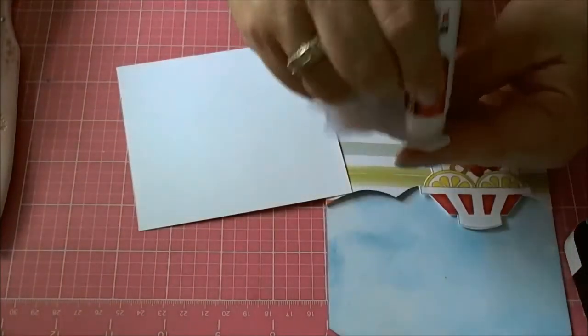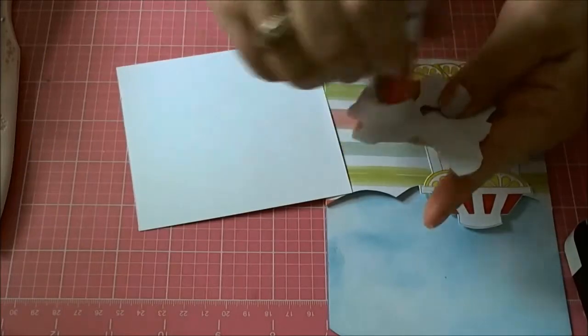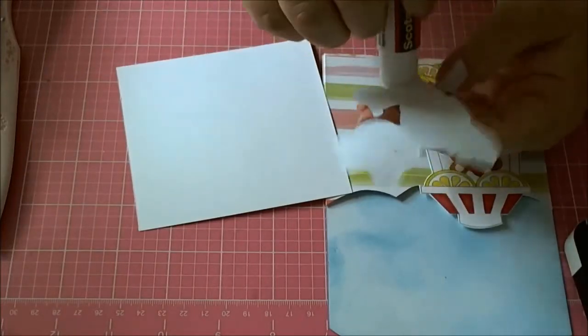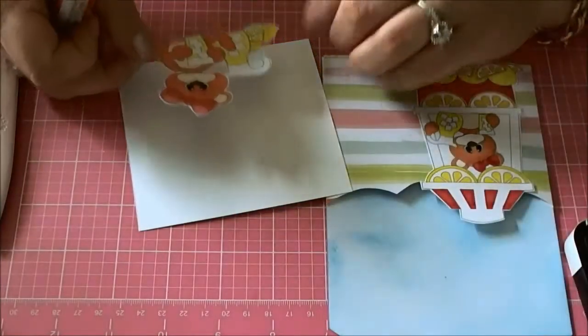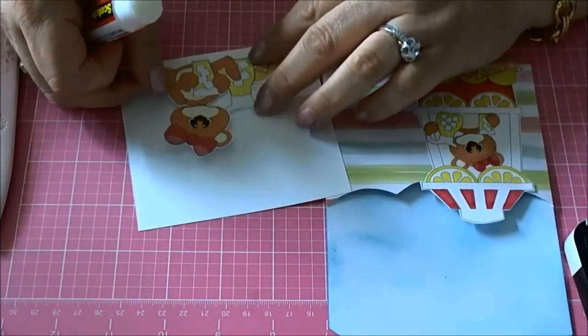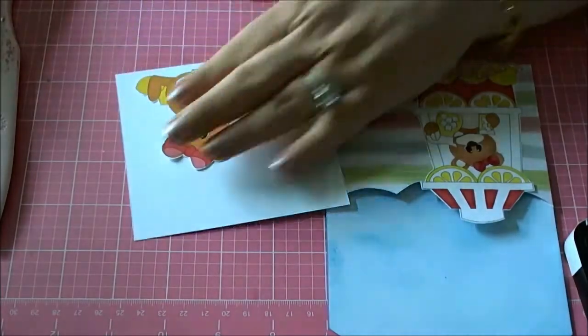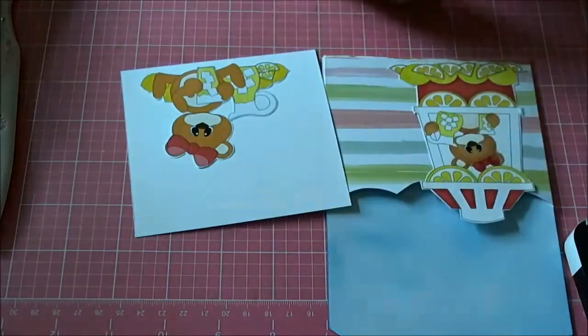This part is going to be for a girl but if you need it for a boy you can find the bird with the lemonade also as a boy so I think it's a very easy card.